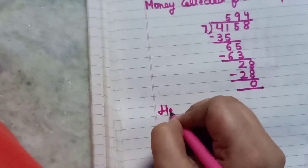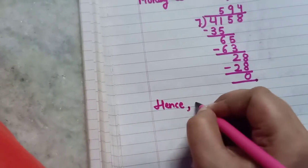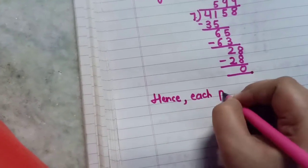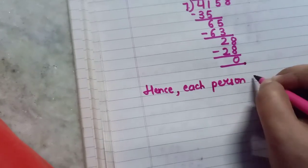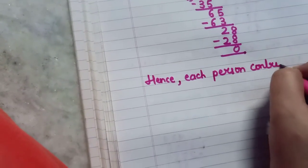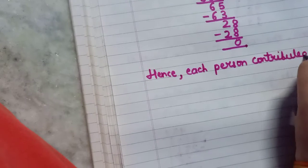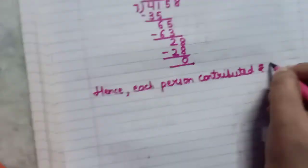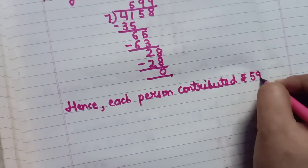So you can write hence each person contributed rupees 594.